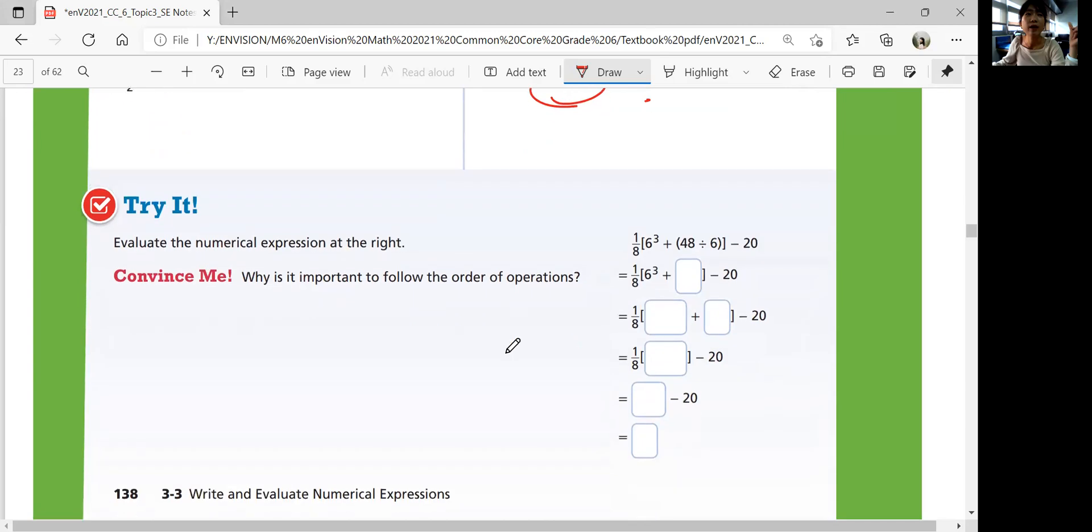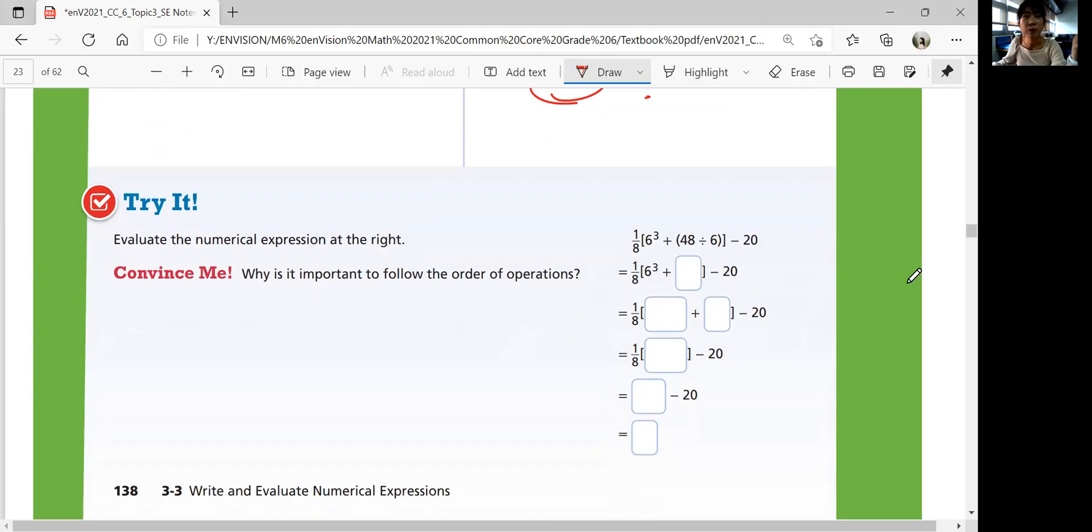Let's try evaluating this numerical expression. 1 over 8 times brackets, 6 cubed plus parentheses, 48 divided by 6, and then close them, minus 20. So first, you need to solve from inside out in your parentheses and brackets.